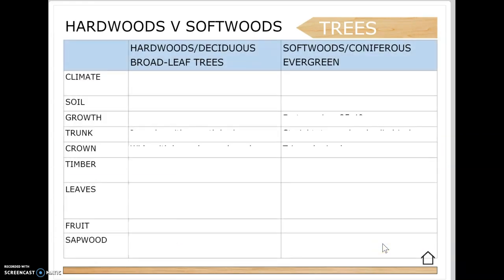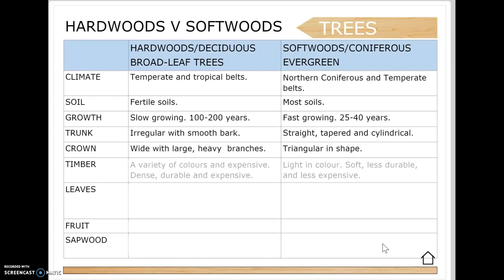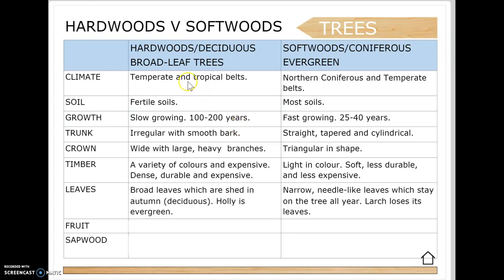Hardwoods and broadleaf trees grow in the temperate or tropical belt. Softwoods and evergreens grow in the northern coniferous and temperate belts. Softwoods prefer moist soils - Ireland has very moist soil - so you'll see a lot of softwoods grown in boggy or mountainous areas where the soil is more moist, and they'll grow a lot quicker and better there.